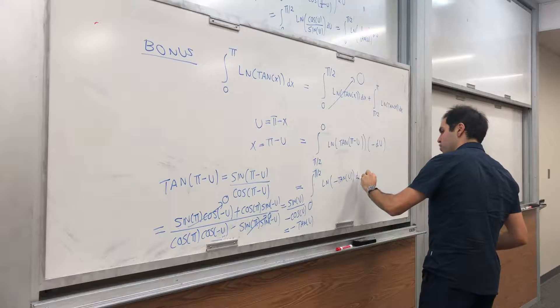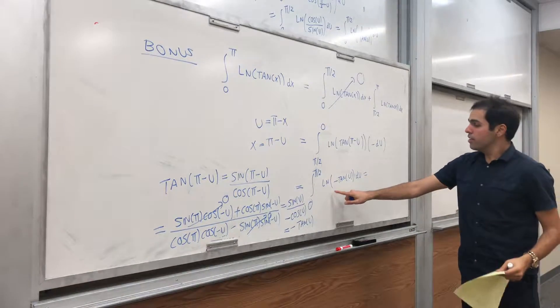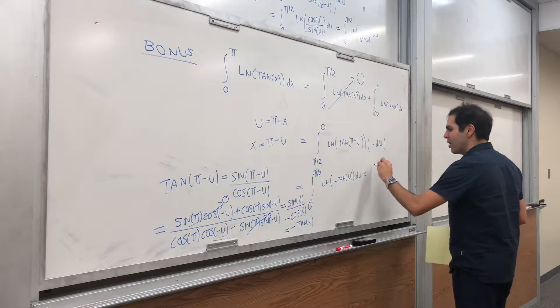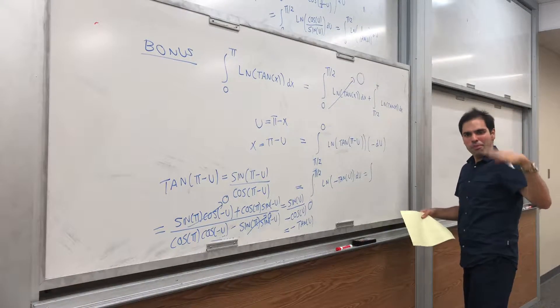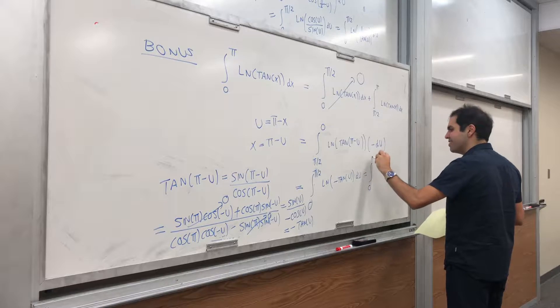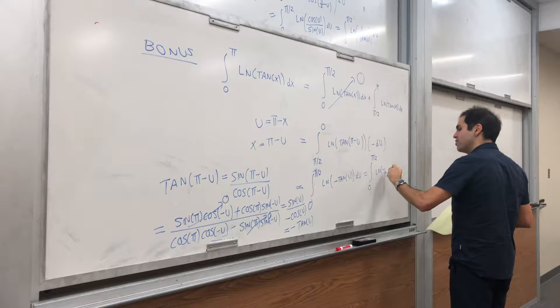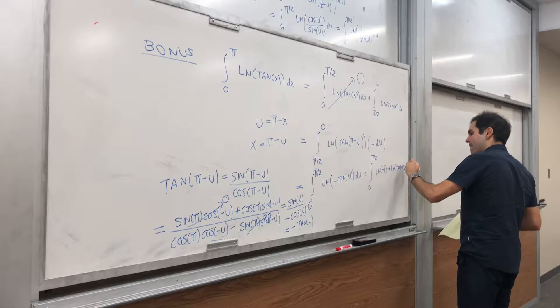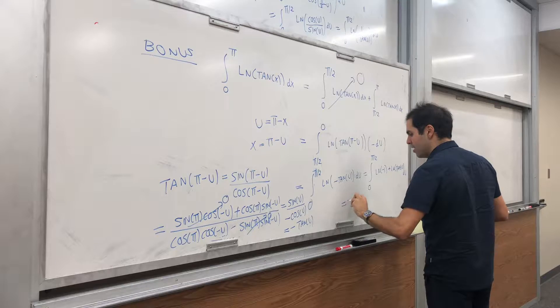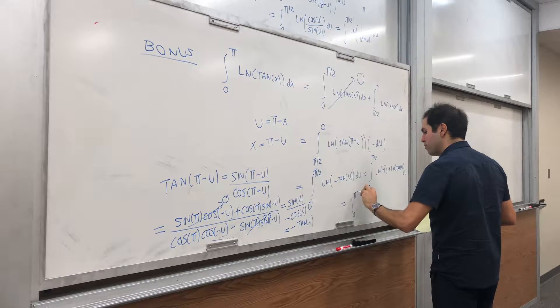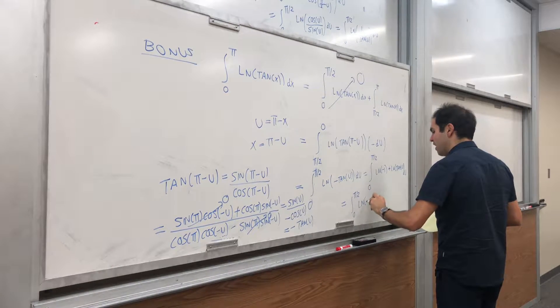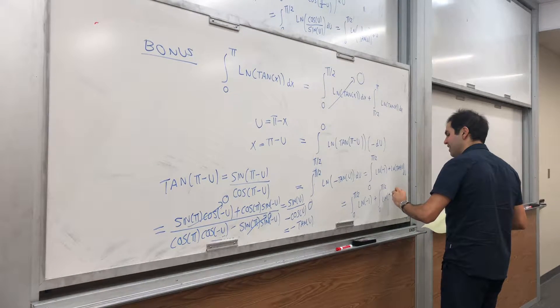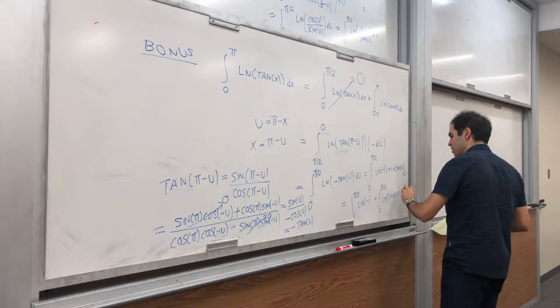And notice this is indeed ln of a negative number, so it's complex value, so let's take principal log, so in this case, let's just assume it's ln of minus 1 plus ln of tangent of u du. And that's equal to integral from 0 to π over 2 ln of minus 1 plus integral from 0 to π over 2 ln of tangent of u du.